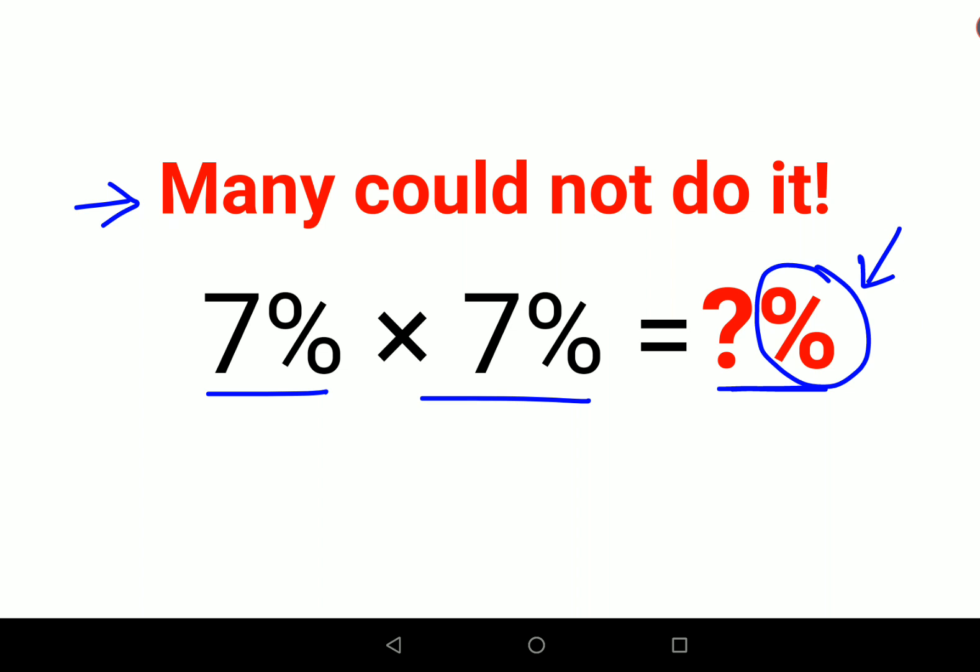First, let's understand: whenever you have any number followed by a percentage sign, that means you can put it in fraction form by dividing that number by 100. So this is 7/100 × 7/100.